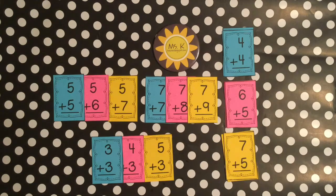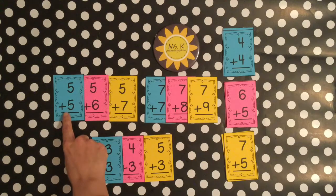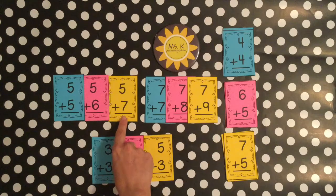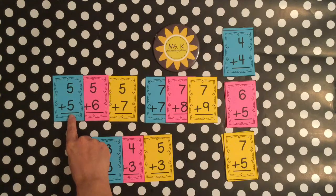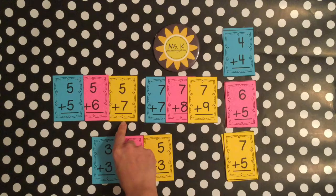So let's look what happens for the student who learns their doubles, doubles plus one, and doubles plus two. If they know their doubles, five plus five, then all of a sudden five plus seven becomes so easy because I know five plus five is 10, five plus seven is just two more.